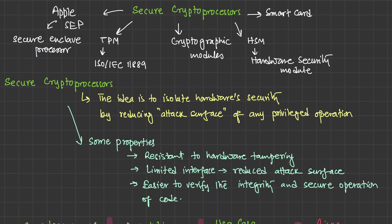Secure crypto processors include: secure enclave processors (like Apple's SEP), TPM (ISO/IEC 11889), cryptographic modules, hardware security modules (HSMs), and smart cards. The idea is to isolate hardware security by reducing the attack surface for any privileged operation. Key properties of secure crypto processors are: resistant to hardware tampering, limited interfaces (reduced attack surface), and easier verification of code integrity and secure operation.